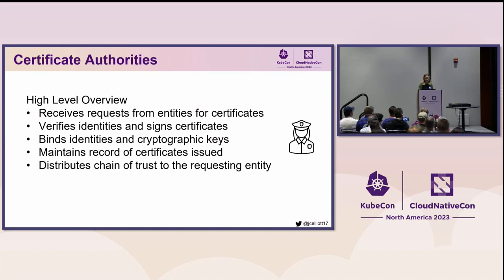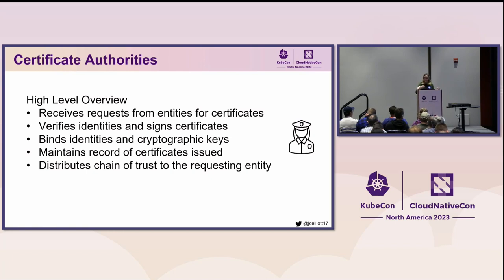Let's look at the role of a certificate authority and how it distributes trust. At a high level, it receives requests for verified identity documents from entities, goes through a process of verifying that identity, and then signs certificates for that entity if it can verify it is who it says it is. It's responsible for binding that identity to that public key, and it also maintains a record of all the certificates it has issued. It then distributes this chain of trust to the requesting entity.